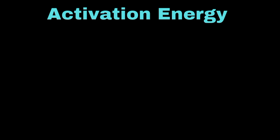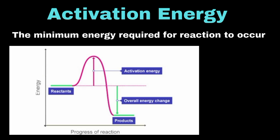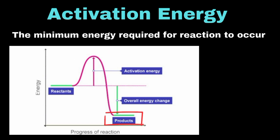Activation energy is the minimum energy needed for a reaction to occur. Looking at the energy diagram, there is a hill or peak position showing that if the colliding molecules cross this hill, they will be converted into products. If their energy is not enough to climb this barrier, no product will be formed. In simple words, activation energy is the energy required for the reacting molecules to climb the hill and change into products.